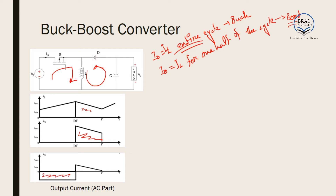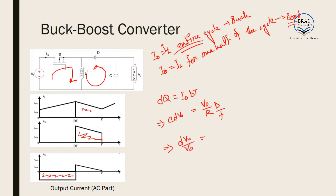The waveform shape is similar to boost, and dQ = I_0 × DT. So dQ = C·dV_0 = (V_0/R) × (D/F). From this, dV_0/V_0 = D / (R·C·F), which is the ripple voltage equation — identical in form to the boost converter case.